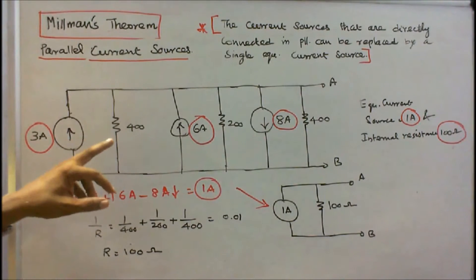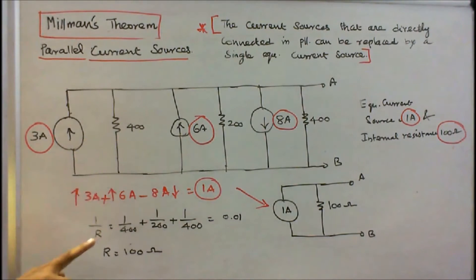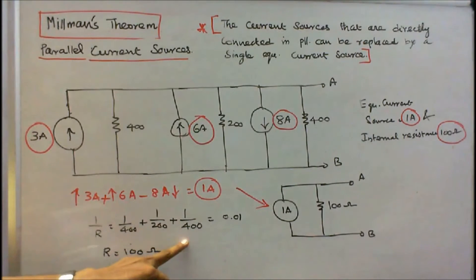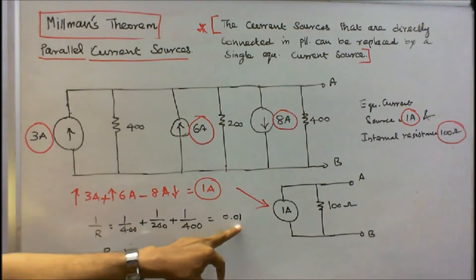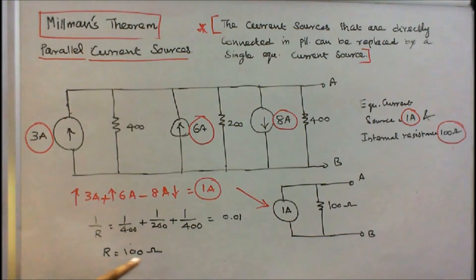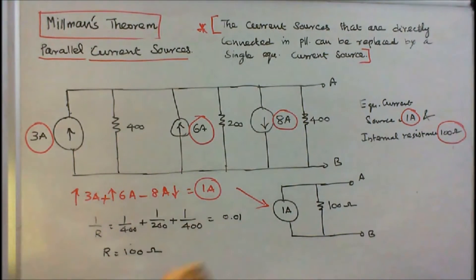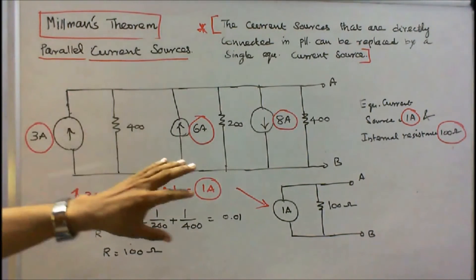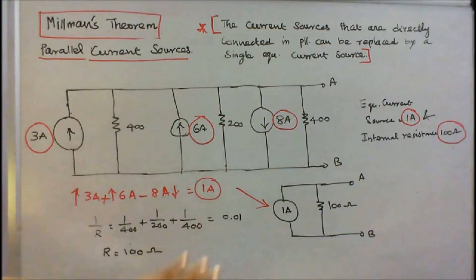The internal resistance: 1/R equals 1/400 plus 1/200 plus 1/400, which equals 0.01. Therefore R equals 100 Ohms. The internal resistance is 100 Ohms. So the entire circuit is converted into a single equivalent current source of 1 Amp and 100 Ohms.